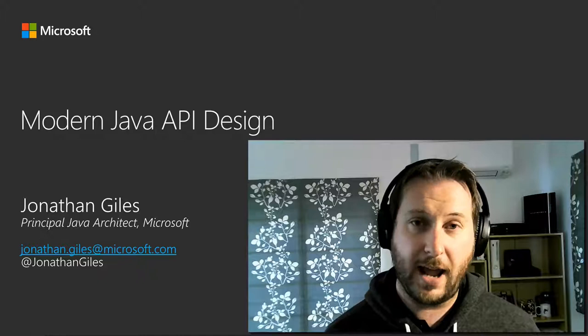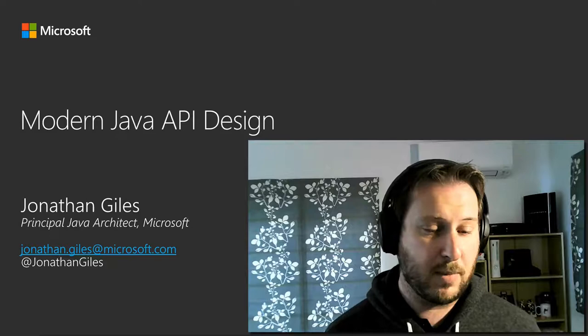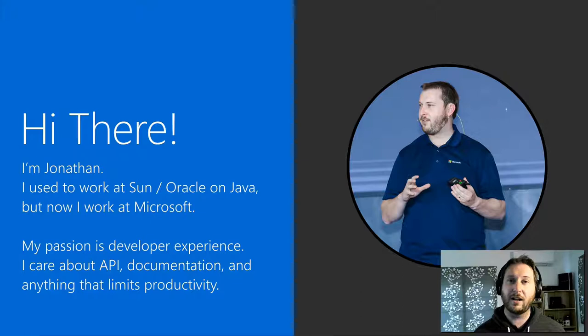If you want to reach out to me, you can find me on Twitter at Jonathan Giles or you can email me at Jonathan.Giles@Microsoft.com. I'm the principal Java architect at Microsoft for the Azure SDKs. Before I worked at Microsoft on the Azure SDKs, I worked at Sun Microsystems and Oracle on the JDK. If you've got the JDK on your machine, you've got my code on there as well, which I'm very proud about. My passion is developer experience — I love to make sure that I delight my end users.